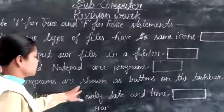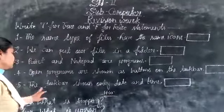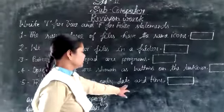Fourth, open programs are shown as buttons on the taskbar. Fifth, the taskbar shows only date and time.